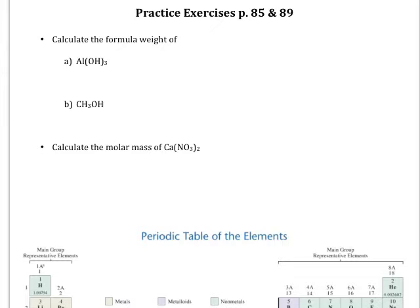Just to go over the difference between the two things, a formula weight is typically abbreviated as FW and that is in units of atomic mass units or AMU.